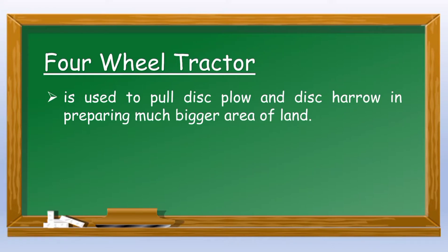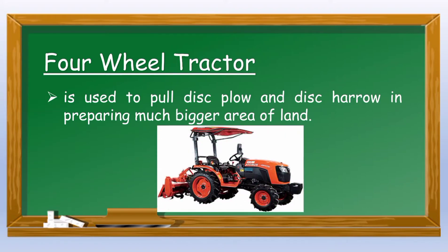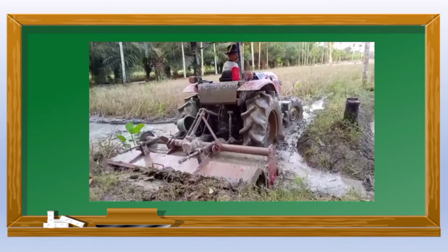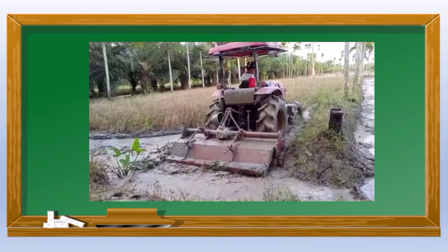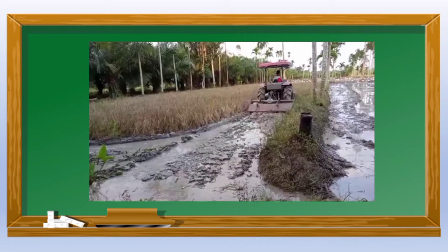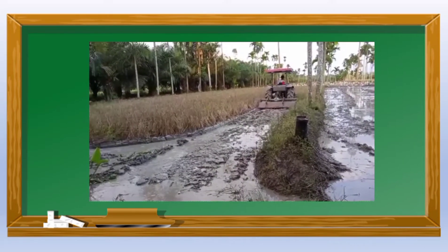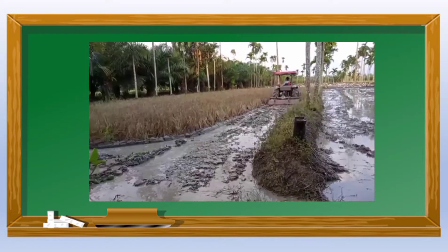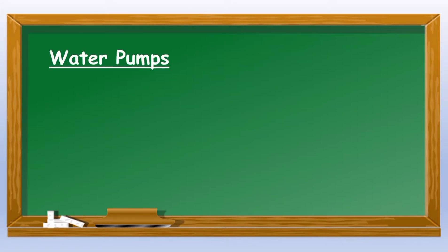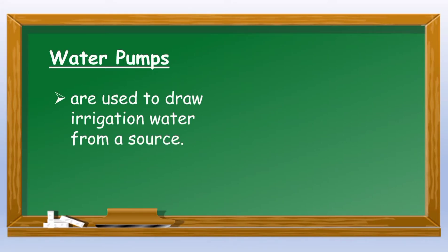The 4-wheel tractor is used to pull disc plow and disc harrow in preparing a much bigger area of land. Water pumps are used to draw irrigation water from a source.